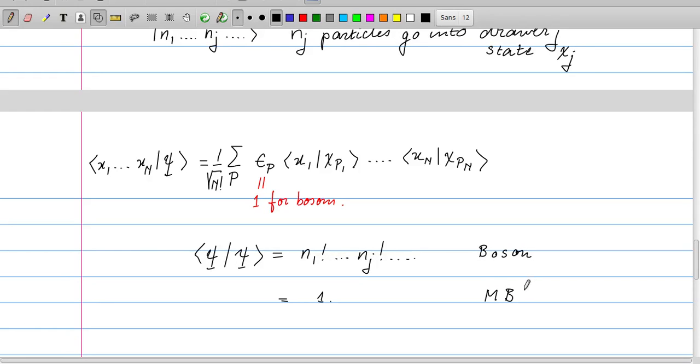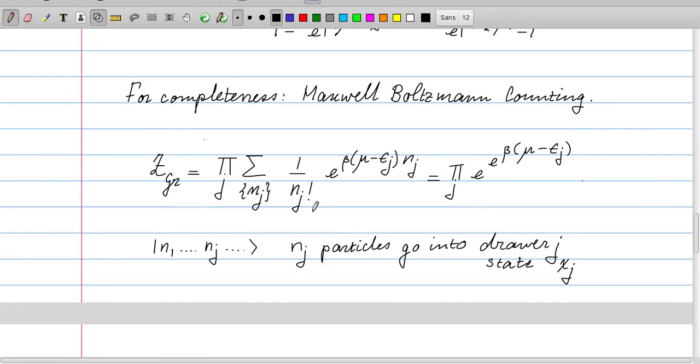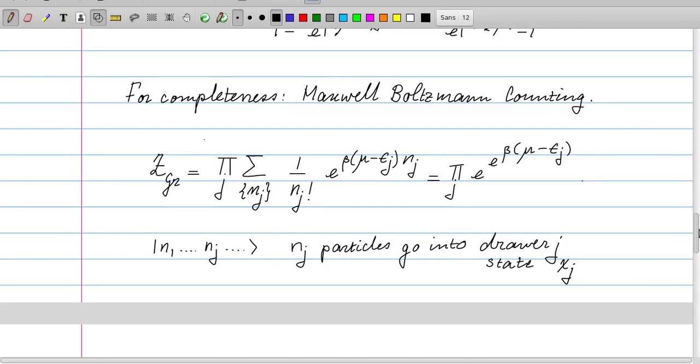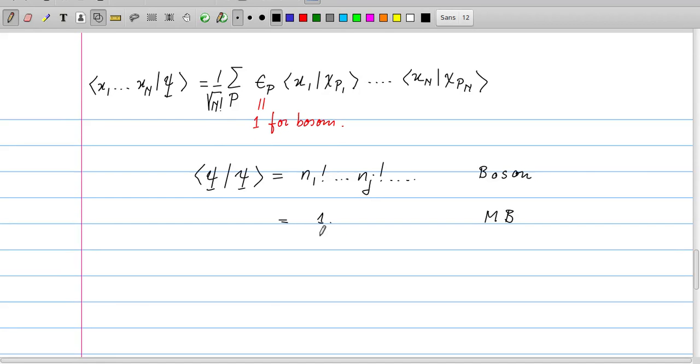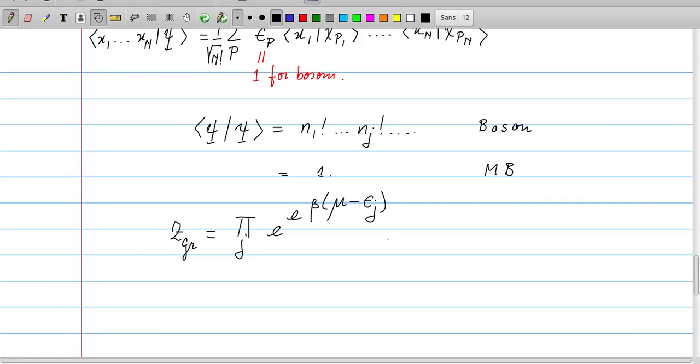Let's go back to this expression. This factor of 1 over nj factorial accounts for this difference in counting the states. If we use that factor, it's easy to see that this is the expansion of an exponential function. The number that we are expanding is itself an exponent. So we get the exponent of an exponent of beta mu minus epsilon j. Here I have repeated that expression.